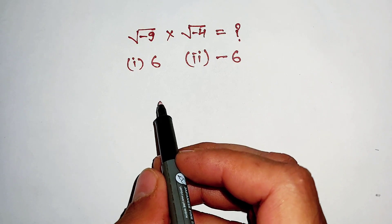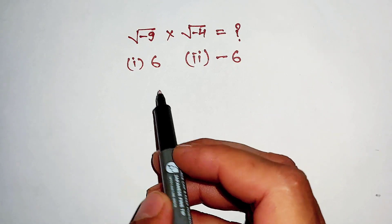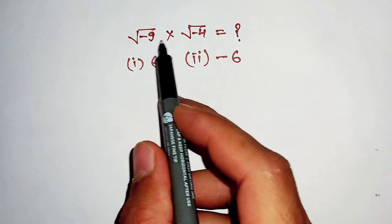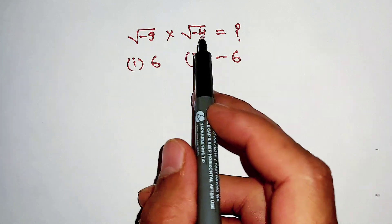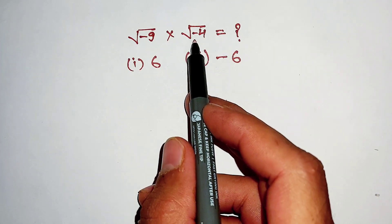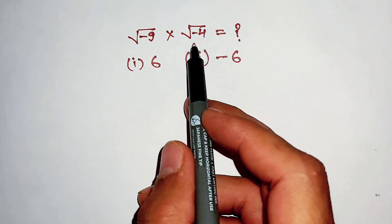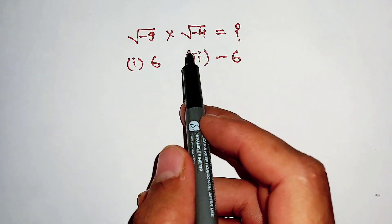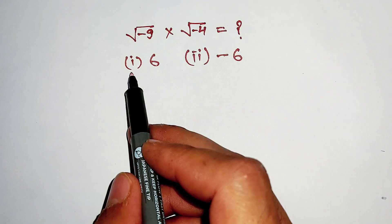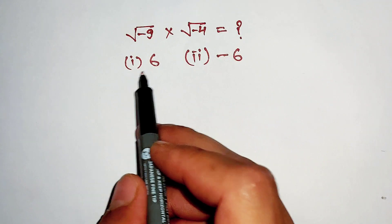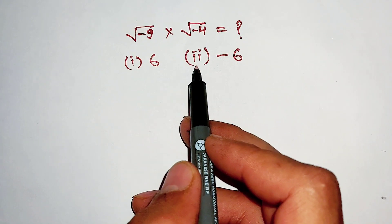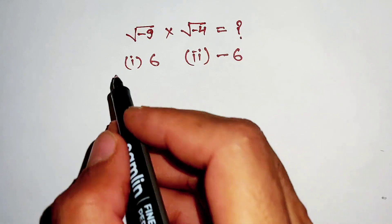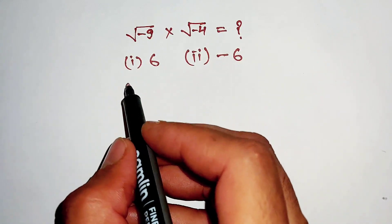Hello everyone. The question is square root of negative 9 multiply square root of negative 4, and we have to find the value of this expression. Is it positive 6 or is it negative 6? Let's find out.